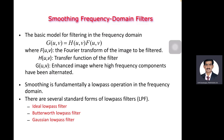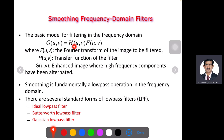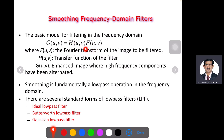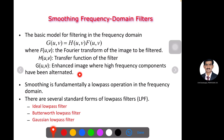The basic model of these filters uses the notation: G(u,v) = H(u,v) × F(u,v). Here the coordinates u, v are the frequency coordinates. F(u,v) is the Fourier transform of the image to be filtered. H(u,v) is the transfer function of the filter. G(u,v) is the enhanced image where high-frequency components have been altered. This is the basic model of the smoothing filters, which is a fundamental low-pass operation in the frequency domain.